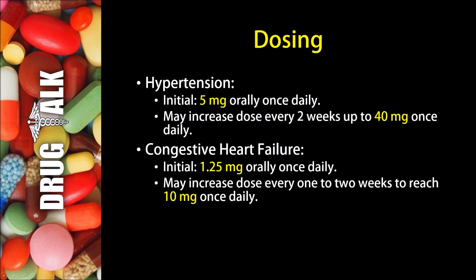Now what about dosing with Nebivolol? In the treatment of hypertension or high blood pressure, the initial dose would typically be 5 mg orally once daily, and the patient may increase the dose every two weeks up to 40 mg once daily. In the treatment of congestive heart failure, the initial dose would be 1.25 mg orally once daily, and the patient may increase the dose every one or two weeks to reach 10 mg once daily.